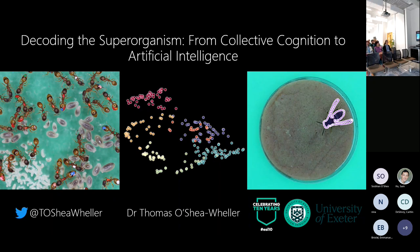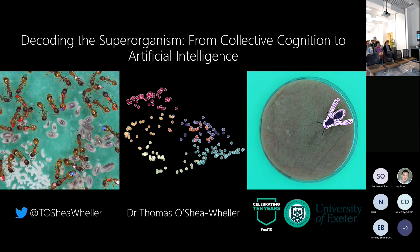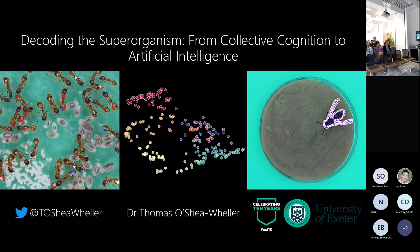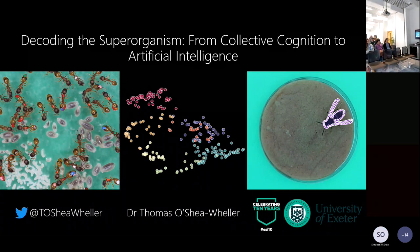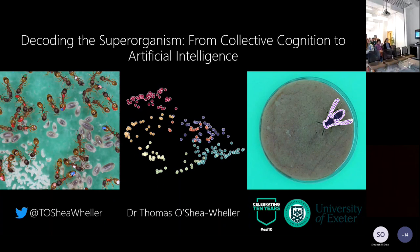Thomas did his first degree in biosciences at the Streatham campus, finishing in 2013. He then went to do a PhD at Bristol, finishing in 2017, followed by a three-year postdoc at Louisiana State University. He then joined the University of Exeter again, where he's been involved in several research projects he'll talk about today.